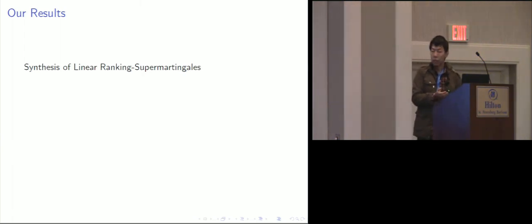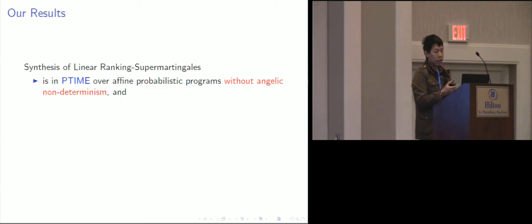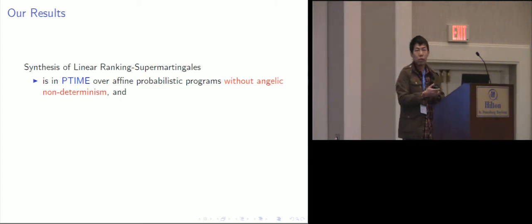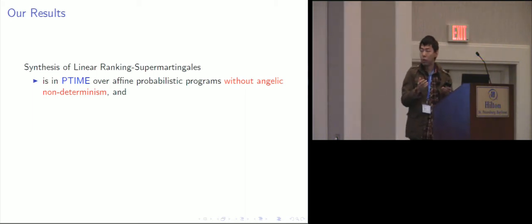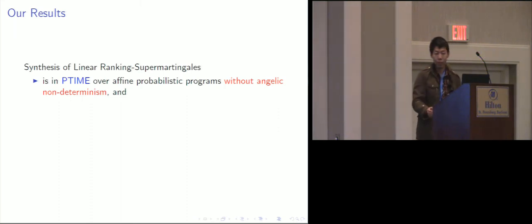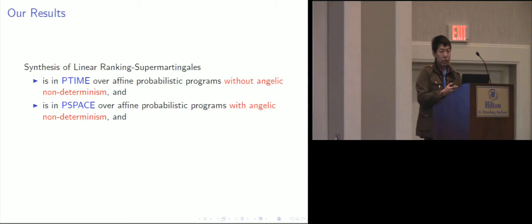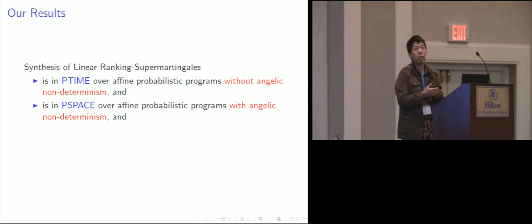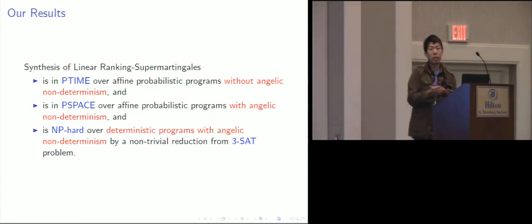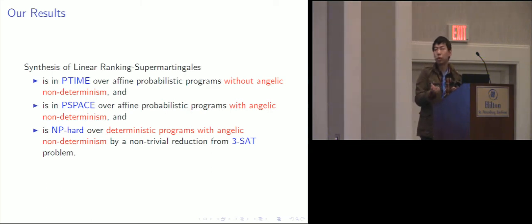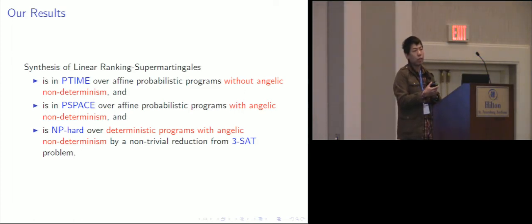We obtain the following results. First, we show that for affine probabilistic programs without angelic non-determinism, our algorithm runs in polynomial time. Our algorithm runs in PSPACE if there is angelic non-determinism. We also prove that synthesizing a linear ranking supermartingale for programs even without probability but with angelic non-determinism is NP-hard. This hardness result is obtained by a reduction from 3-SAT.